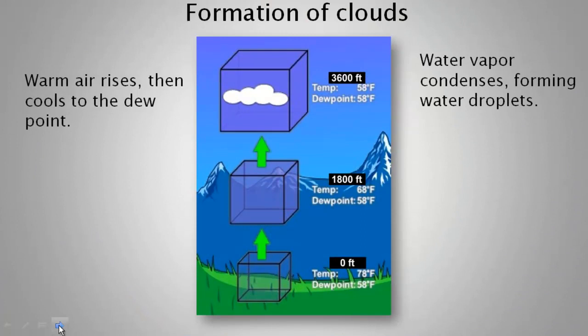Clouds form when rising air is cooled to its dew point — that is the point at which the air becomes saturated. Water vapor cools and condenses into water droplets. They form on tiny dust particles, ice, and salt. As millions of droplets form, a cloud begins to take shape.